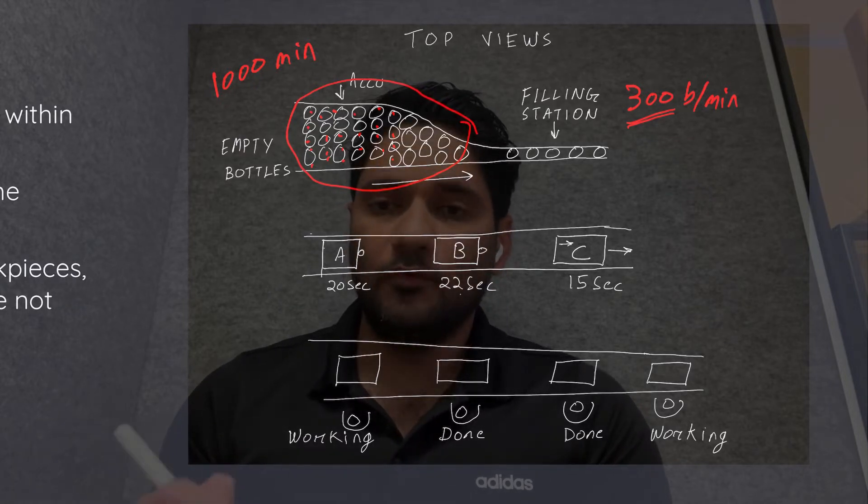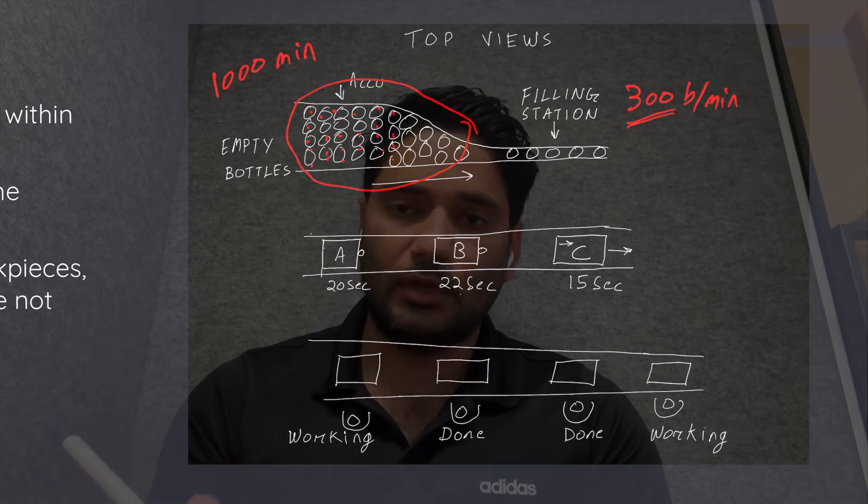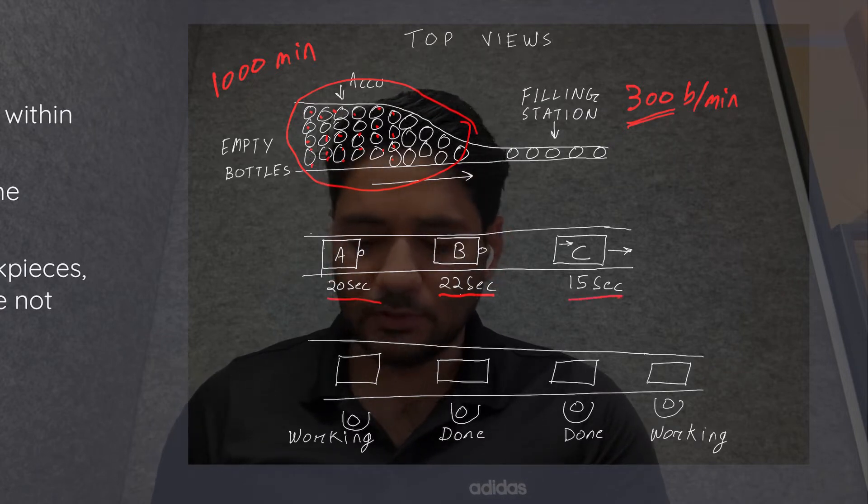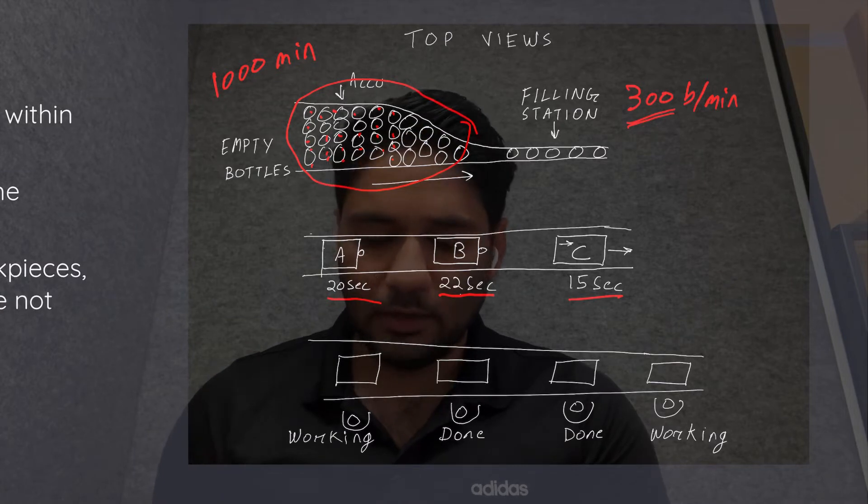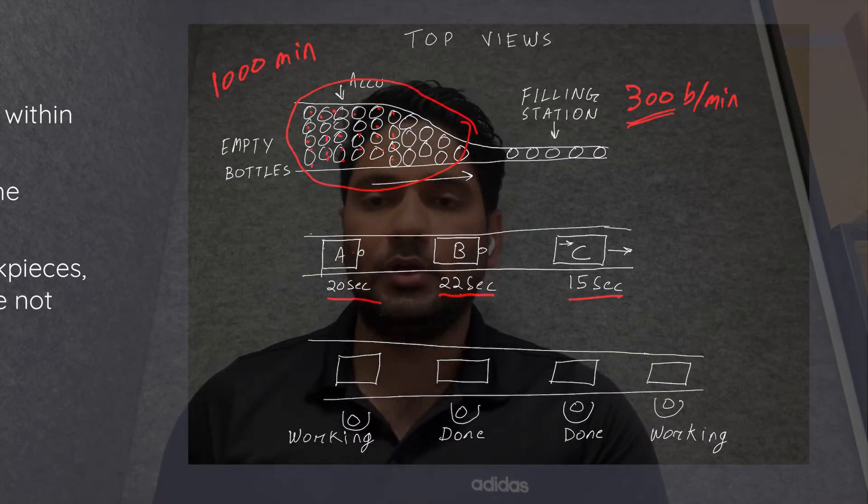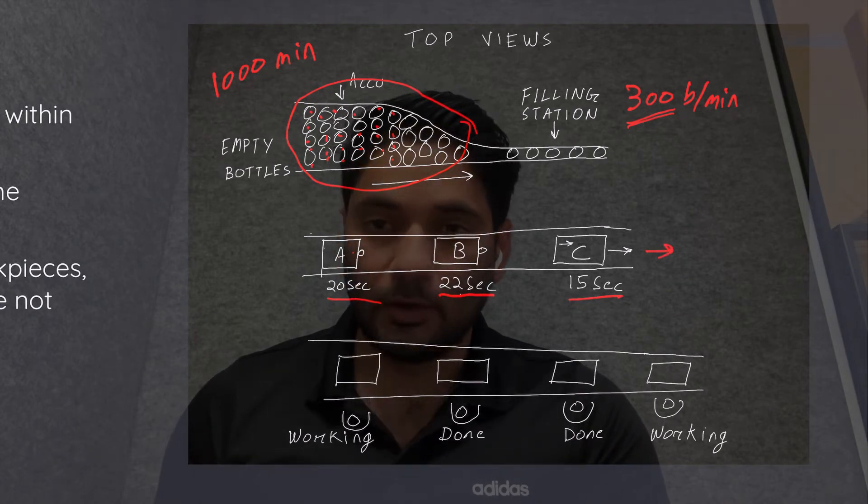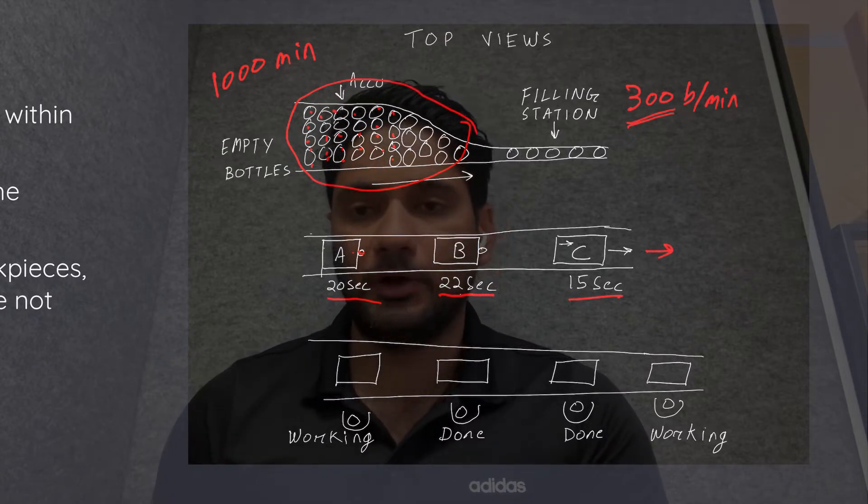The second case is when there is an operation time difference on a single conveyor. B takes around 22 seconds, A takes 20 seconds, and C takes 15 seconds. So if this is a pitch conveyor, we'll have to wait till A, B, C all three are complete. But in this particular case, once C is complete, it can move forward and exit the conveyor, and we can hold A until B is complete.